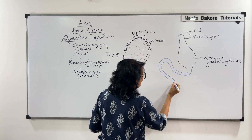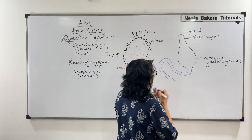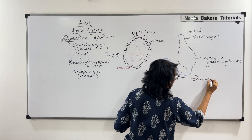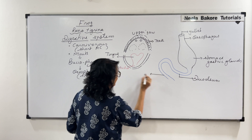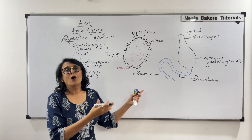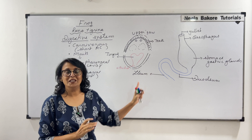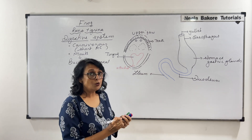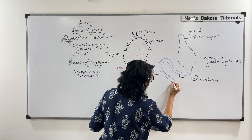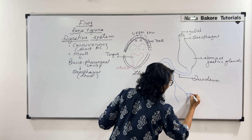The intestine is divided into the duodenum — the first part — and the later part is the ileum. This is basically comparable to the small intestine of humans: duodenum, jejunum, ileum type. And then it leads into the rectum, which is a slightly swollen structure.